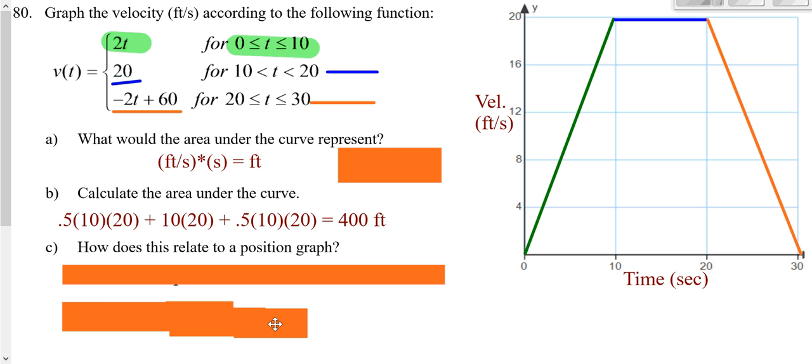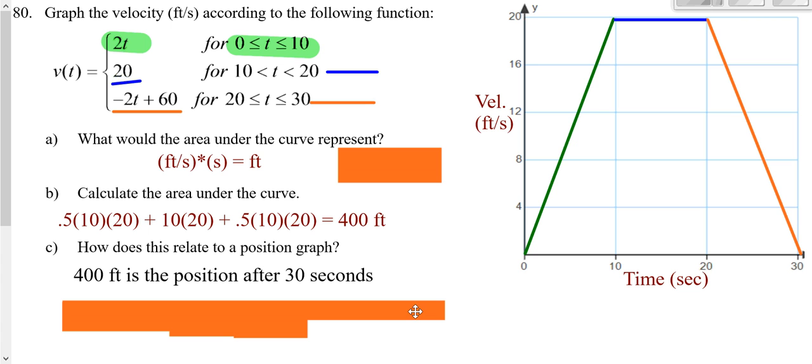So how does this relate to your position graph? Well, 400 feet is your position after 30 seconds.